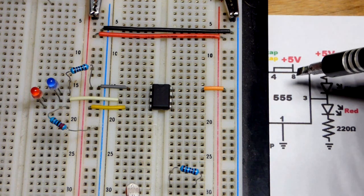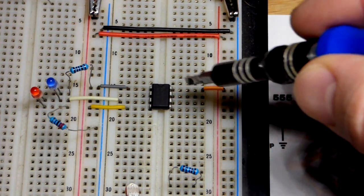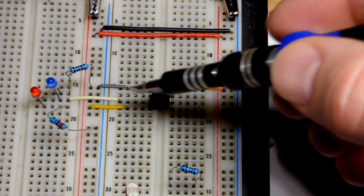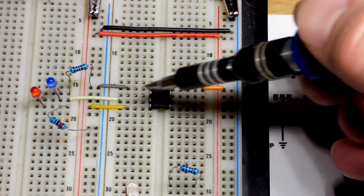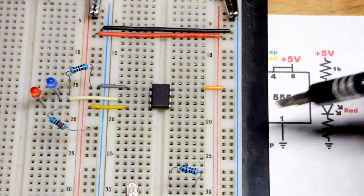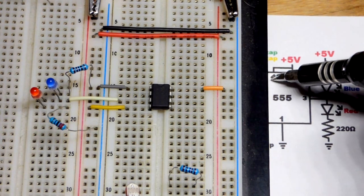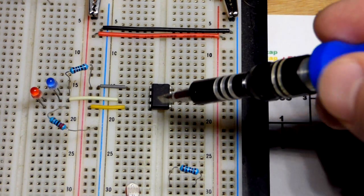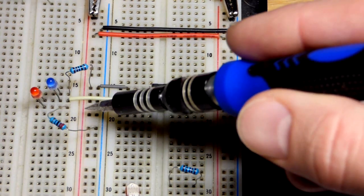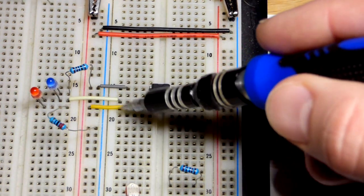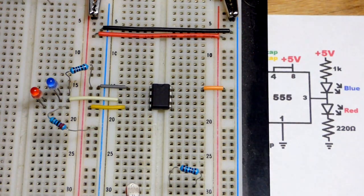We have to power the 555 timer - pin number eight to the positive supply, and pin number one to ground. We have a white jumper there to connect pin three across to keep things from getting cluttered. Pin four is the reset pin. We don't want it to reset - it will reset if we give it a low signal, so we just give it a full five volts there. That prevents it from resetting.